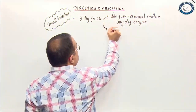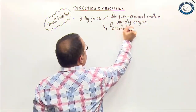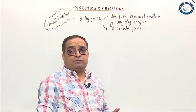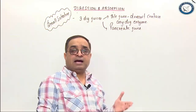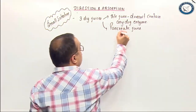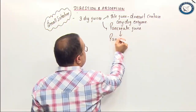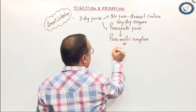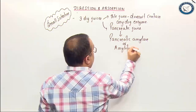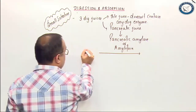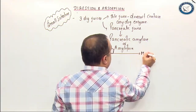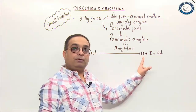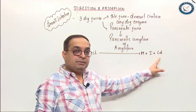The second juice in the small intestine is pancreatic juice. It is the richest digestive juice because it has a variety of enzymes for digesting proteins, carbohydrates, fats, and nucleic acids. Pancreatic juice contains the enzyme pancreatic amylase, also called amylopsin, which breaks the remaining starch into maltose, isomaltose, and limit dextrins.